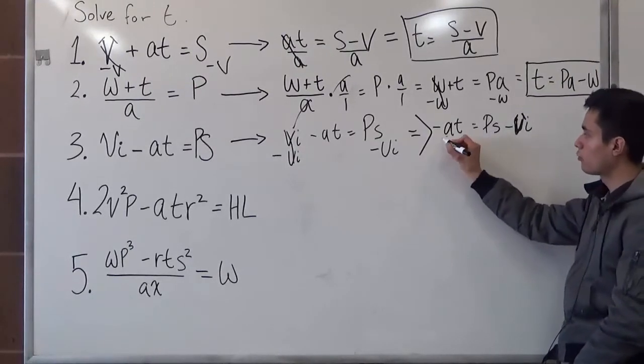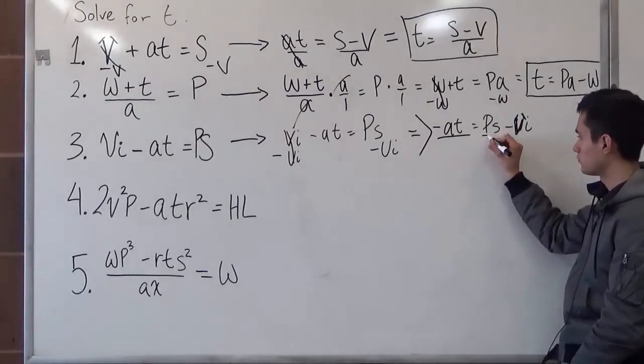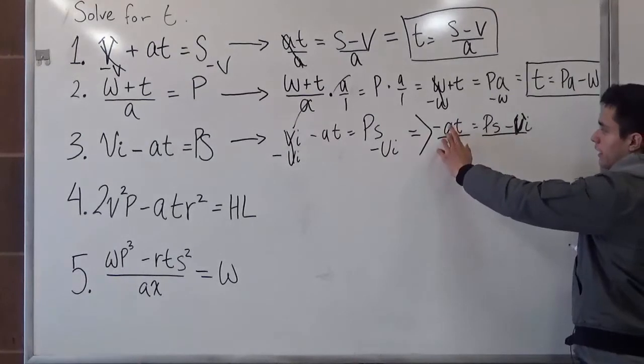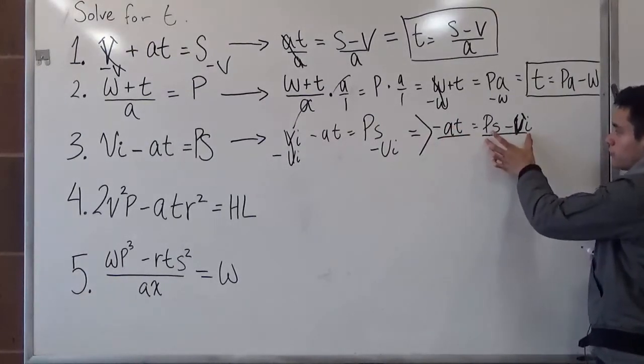And we see here that negative a times t is equal to p times s minus v i. So in order to do that, our rule is we divide. Remember, we have to treat this as a whole. So when we divide a, we want to divide it from this as a whole.